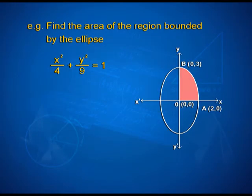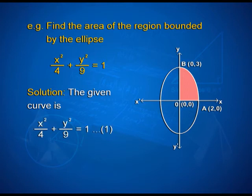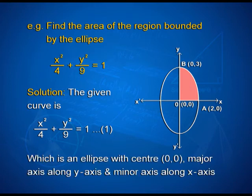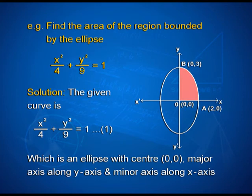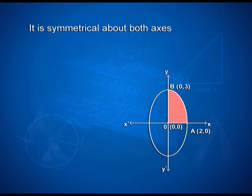Here is one more example: find the area of the region bounded by the ellipse x²/4 + y²/9 = 1. For the solution, the given curve is x²/4 + y²/9 = 1 — take this as the first equation. This is an ellipse with center at the origin (0, 0), major axis along the y-axis, and minor axis along the x-axis. We can see the y-axis, the x-axis, with points (2, 0) and (0, 3), and the origin (0, 0). It is symmetrical about both axes.